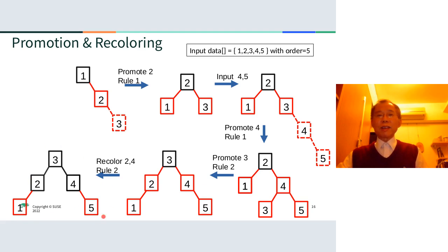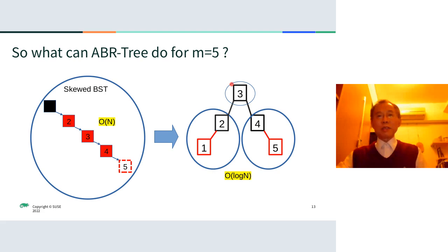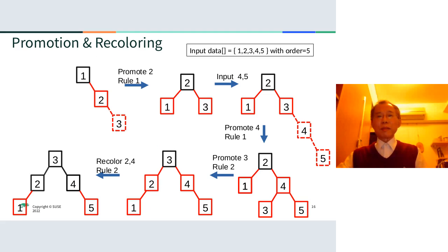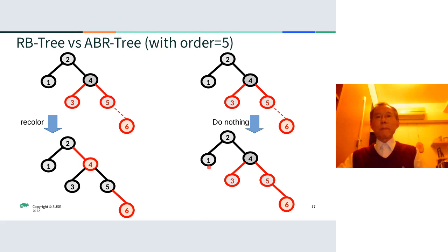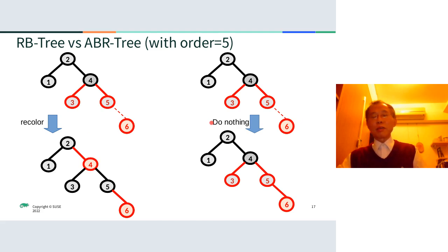Let's go back and look at this final result. If you use the ABR tree, you get this final result. A bigger order M might sometimes be a good thing because you don't need to bother the CPU as often. For example, in a case where the red-black tree would require recoloring, with ABR you just do nothing because the summation from Rule 1 and Rule 2 are not matched.